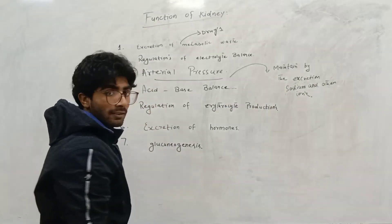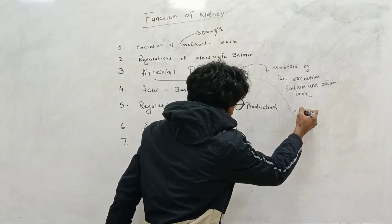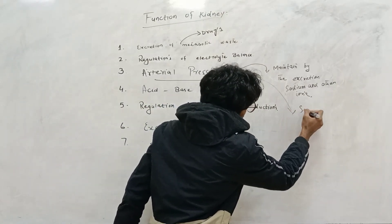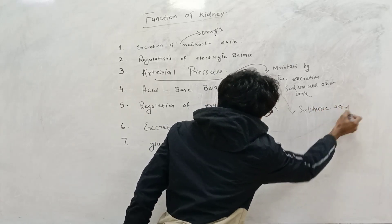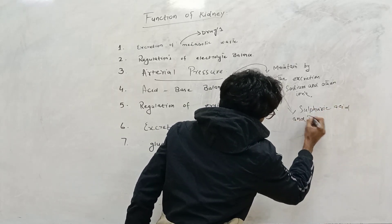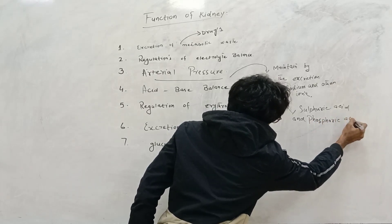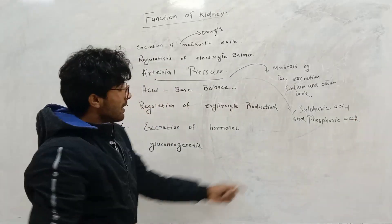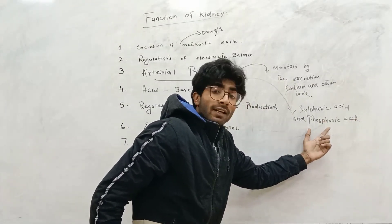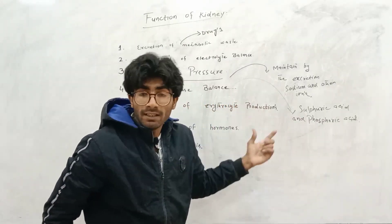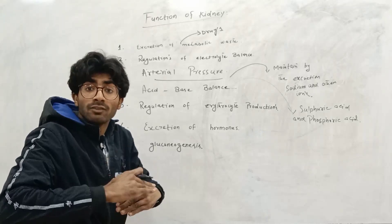Acid-base balance. We know that in our body, sulfuric acid and phosphoric acid excrete from the kidney. Acid-base balance is in normal situation.